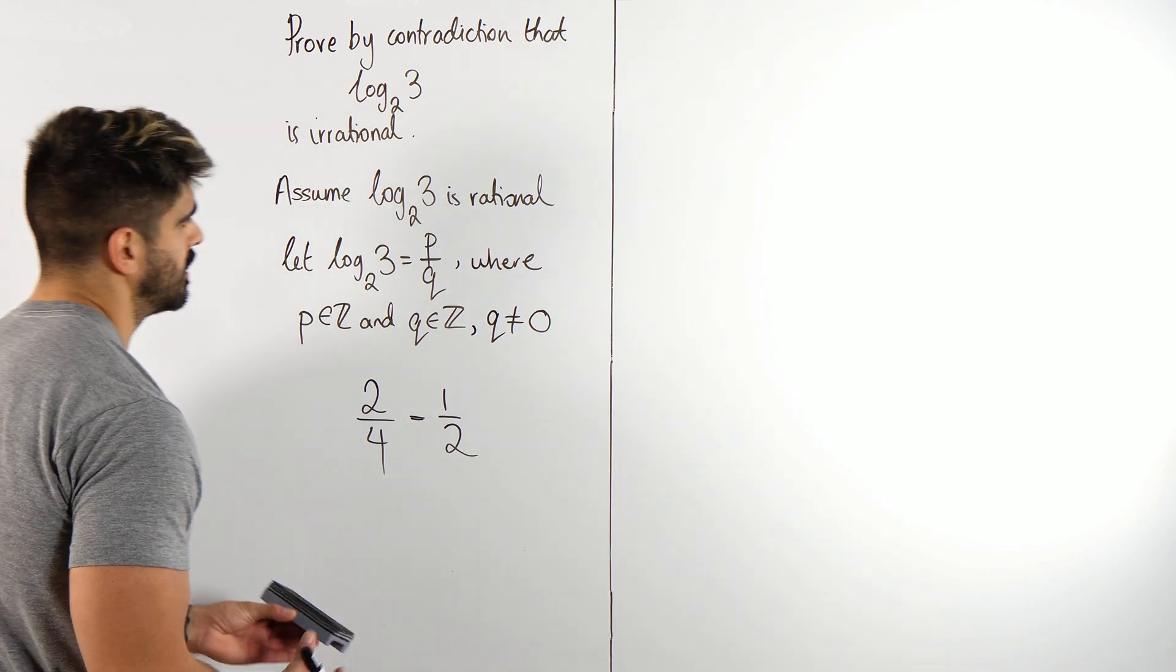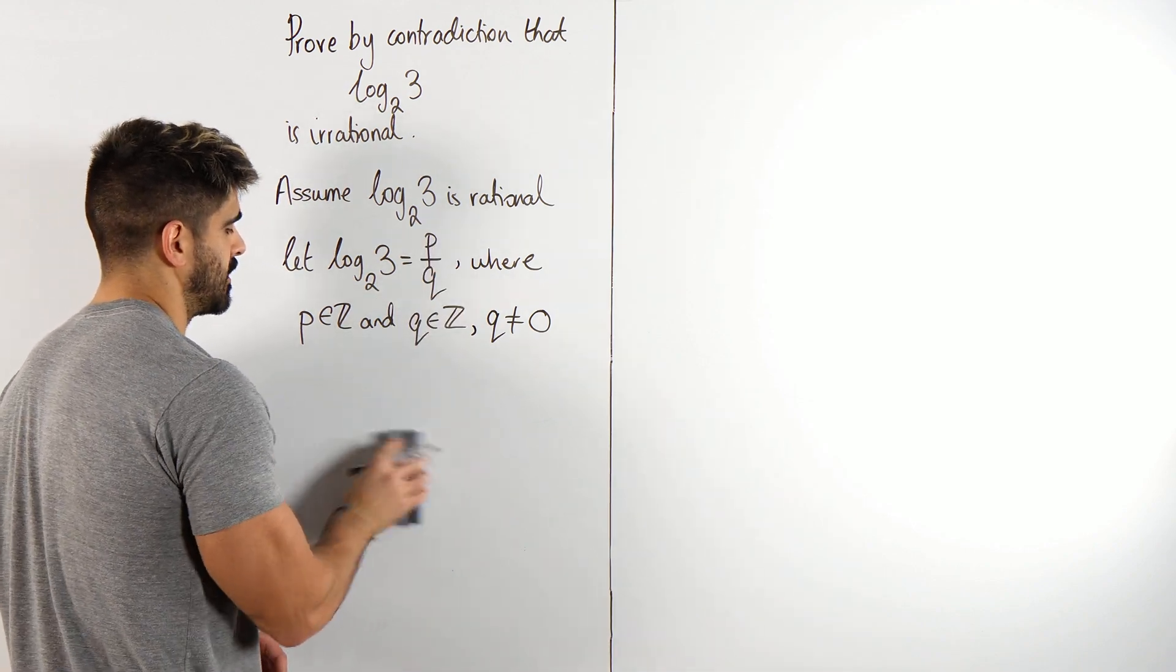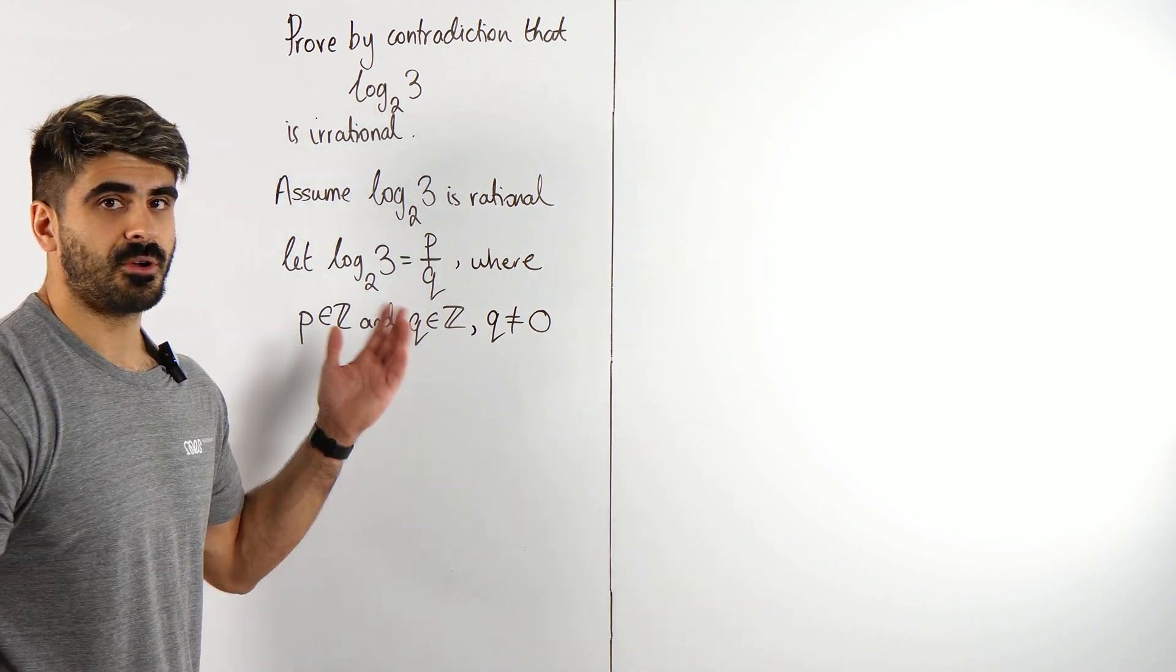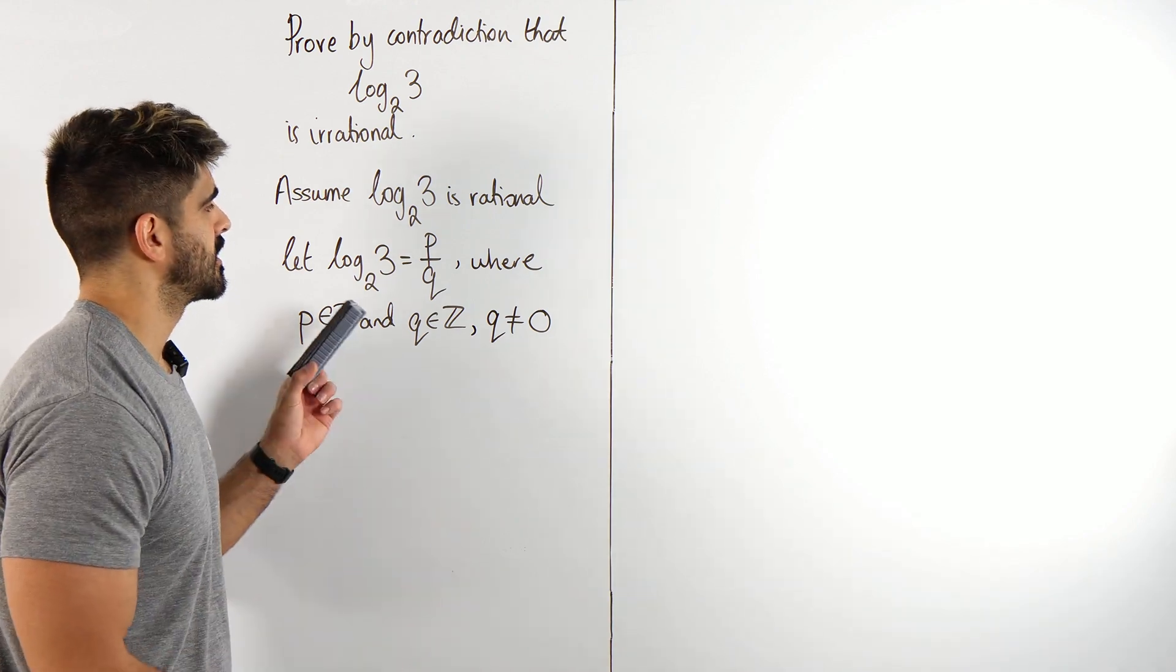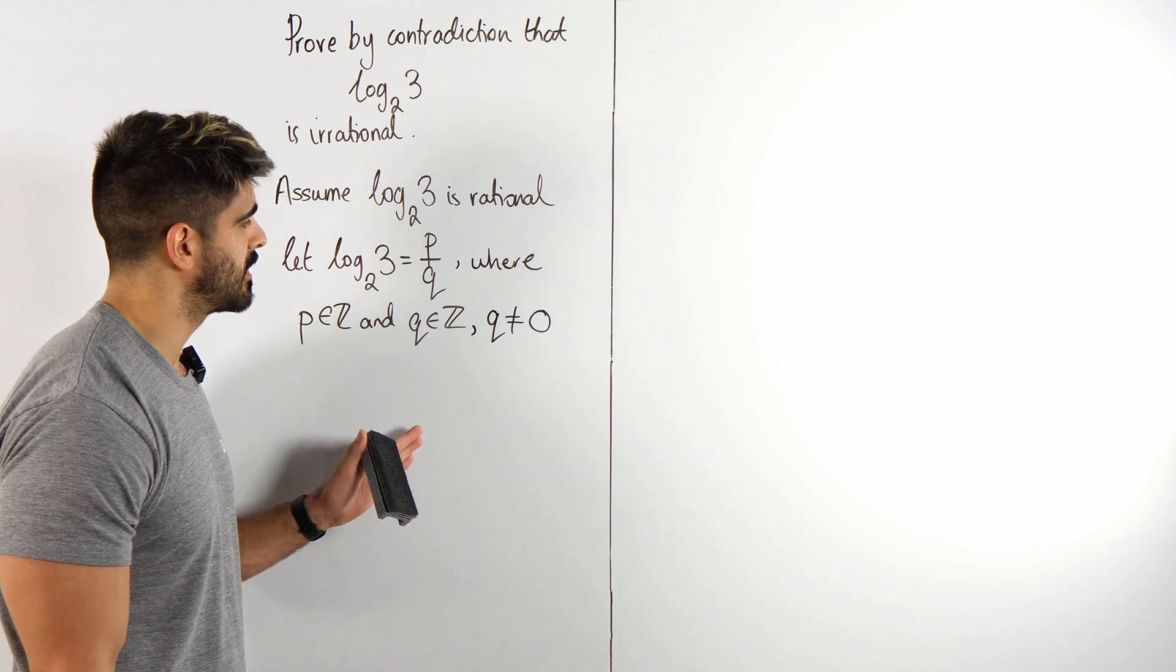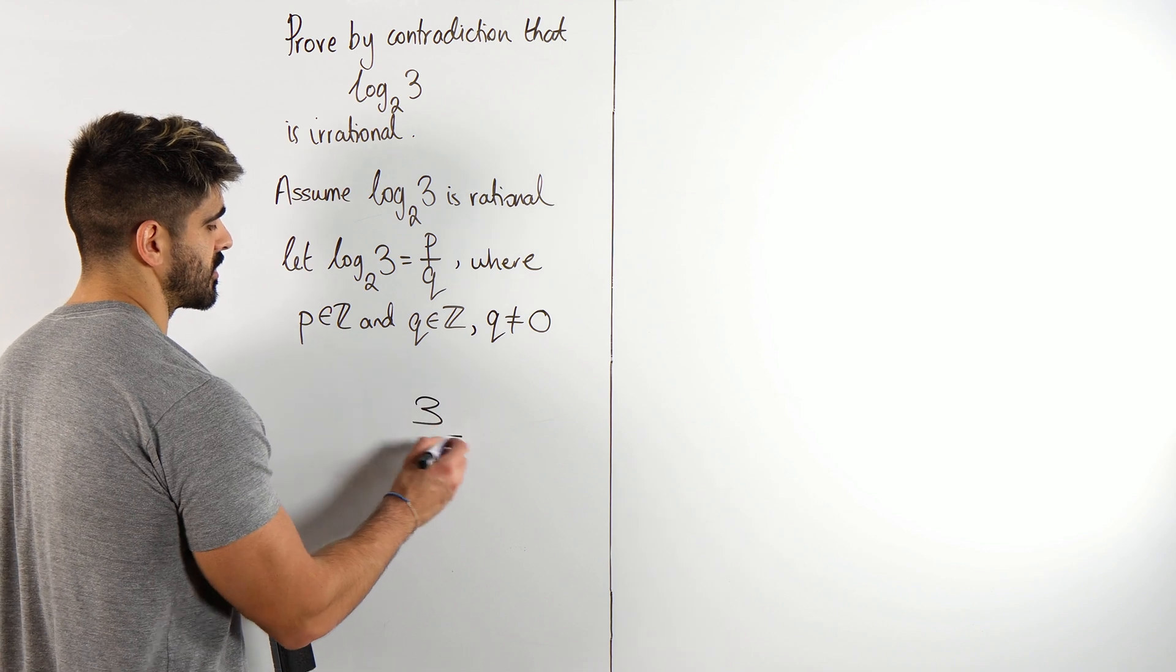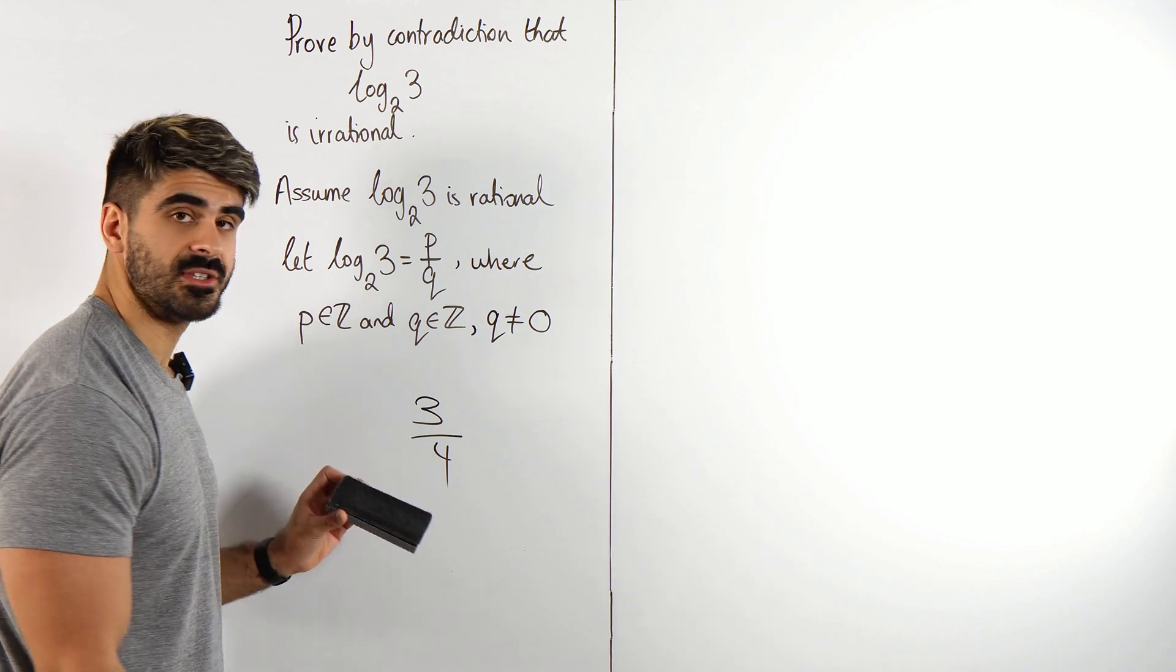Now what's the posh way of saying that this is in its simplest form? You wouldn't say it's in its simplest form. You could say the greatest common divisor of both numbers is 1, but an even nicer way of saying that is greatest common divisor means highest common factor, the biggest number that goes into p and q is 1. Remember when we had 1 half, the biggest number that goes into both 1 and 2 is just 1. If I had 3 quarters, the biggest number that goes into both 3 and 4 is 1.